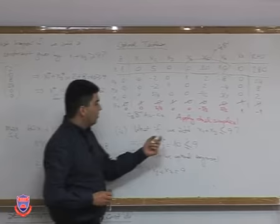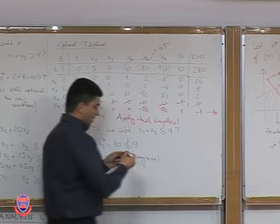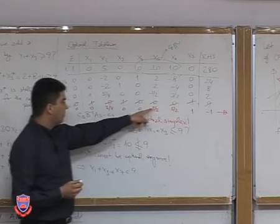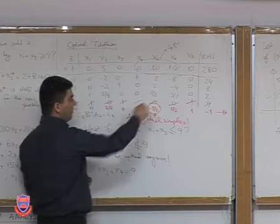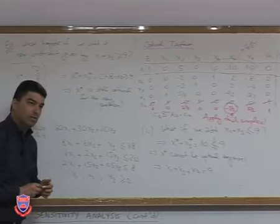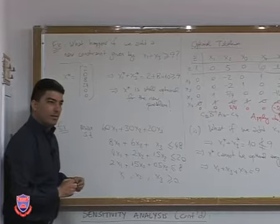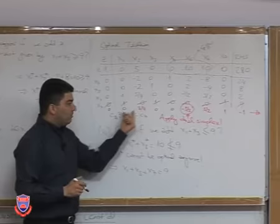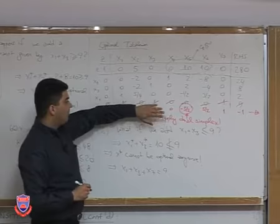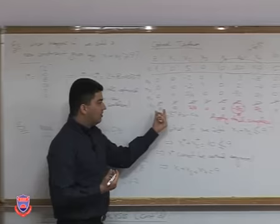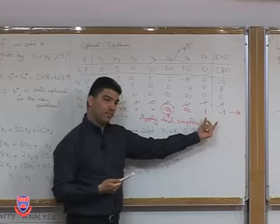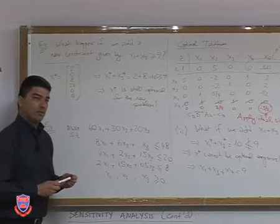We force x7 out of the basis. In the dual simplex, we look at the row with the negative right-hand side and find negative entries — there's only one. So we pivot on that entry, making x5 basic and x7 non-basic, and continue. This is symmetric to the previous case: when adding a new variable to the primal and losing dual feasibility we use primal simplex; when adding a new constraint and losing primal feasibility we apply dual simplex. Remember to put the tableau in proper form first — otherwise the results are meaningless.